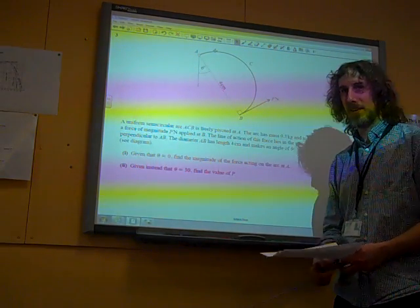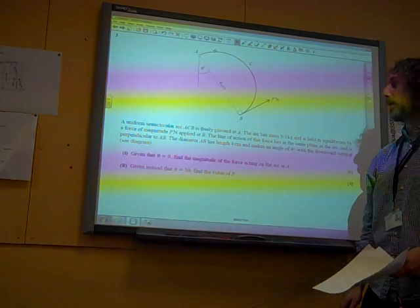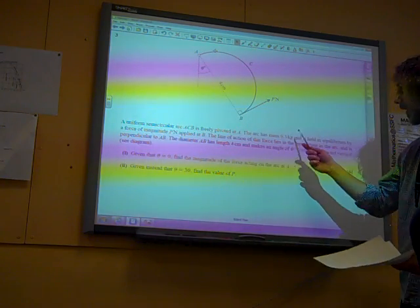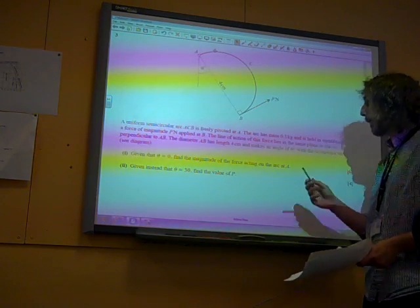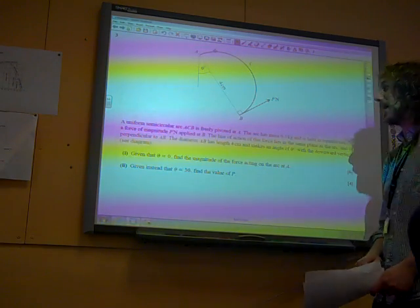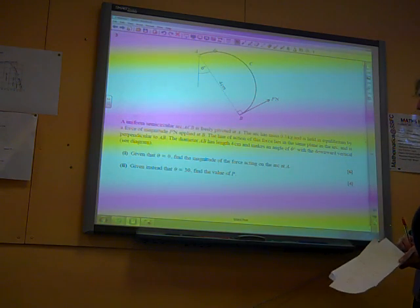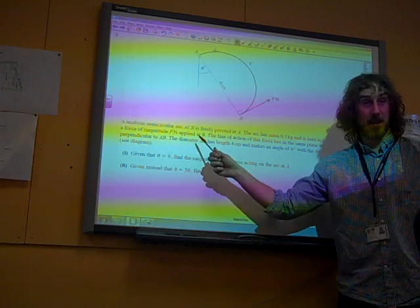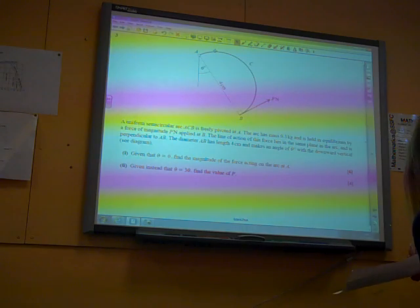Question 3. A uniform semi-circular arc ACB is freely pivoted at A, very similar to the arc that Noah used. The arc has mass 0.3 kg and is held in equilibrium by a force of magnitude P newtons applied at B. The line of action of this force lies in the same plane as the arc and is perpendicular to AB. AB has length 4, the diameter, and makes an angle theta with the downward vertical.